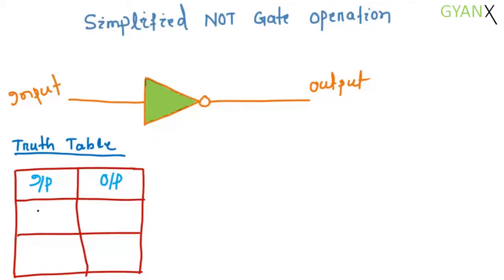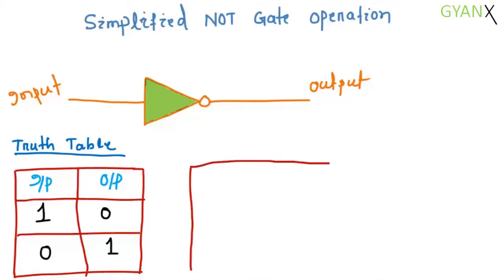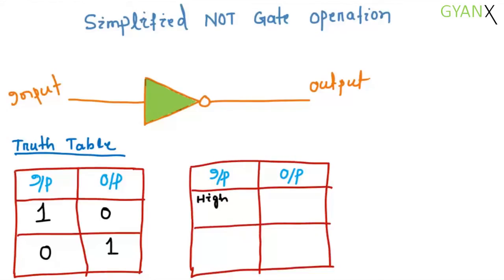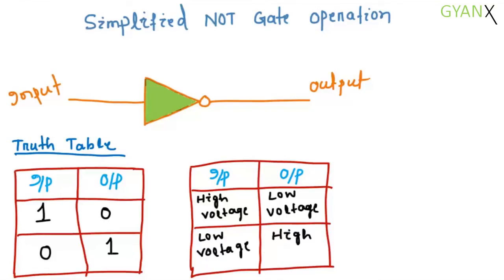When input is logic 1, output is logic 0, and when input is logic 0, output is logic 1. In other terms, when input is high voltage, output is low voltage, and when input is low voltage, output is high voltage, which is the inversion of the input.